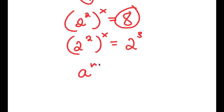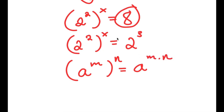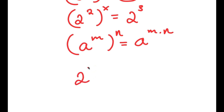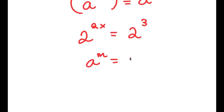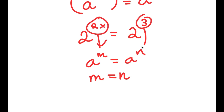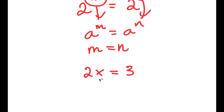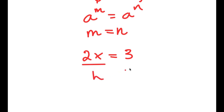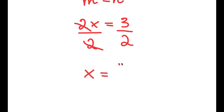If I have something in the form a to the power of m to the power of n, this is equal to a to the power of m times n. So 2 squared to the power of x becomes 2 to the power of 2x, and this equals 2 to the power of 3. Now if I have a to the power of m equals a to the power of n, this means that m equals n. So I just need to solve 2x equals 3, which is a simple equation. I divide both sides by 2, and I get x is equal to 3 over 2.